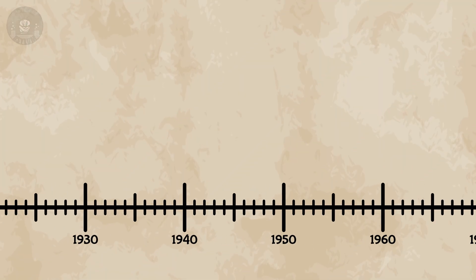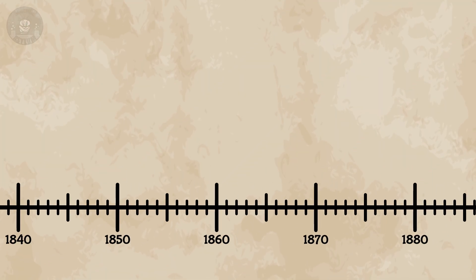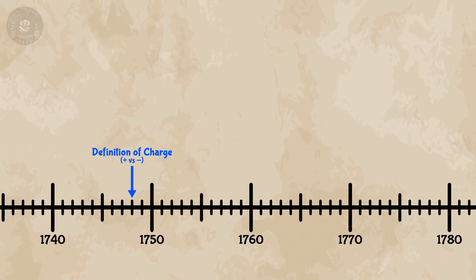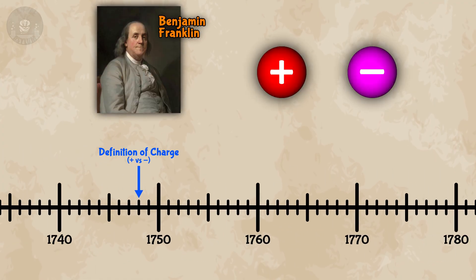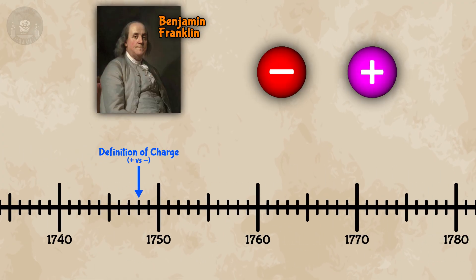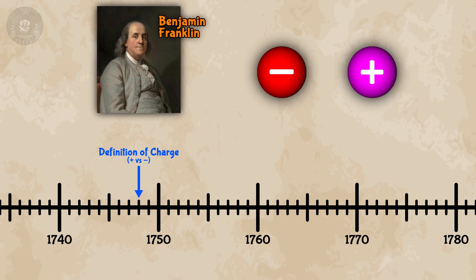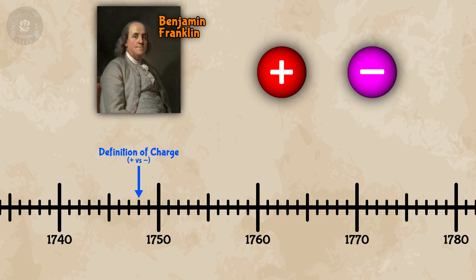The two types show opposite behaviors, so as long as the labels are opposites, we're fine. It doesn't even matter which ones we label which. The labels we use today were decided 270 years ago in 1748 by Ben Franklin. It might have been better to label them the other way, but now we're stuck with it.